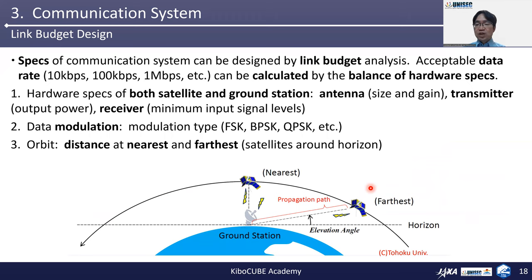To decide the specs of a communication system, we need to understand the analysis method of link budget. Acceptable data rates such as 10 kbps, 100 kbps, 1 Mbps, etc. can be calculated by the balance of hardware specifications. This technique is explained in a lot of reference books and is very general knowledge for RF communications. We need to decide the required hardware specifications for both the satellite and ground station. The important hardware is antenna, transmitter, and receiver.